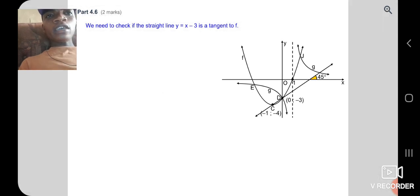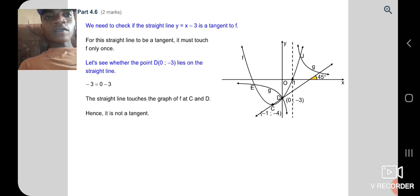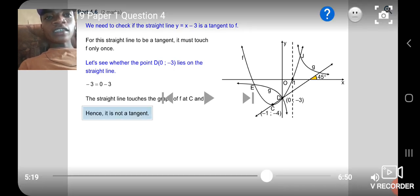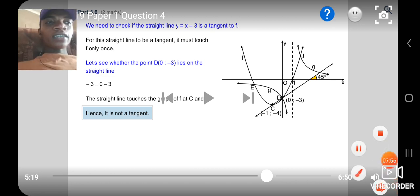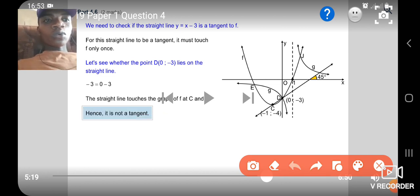Question 4.6. We need to check if the straight line y = x - 3 is a tangent to the graph. It's not tangent because it's cutting on D and C. It's not a tangent because it cuts twice. The straight line chosen the graph of f at C. Hence, it's not a tangent because we know tangent is touching through the equation.